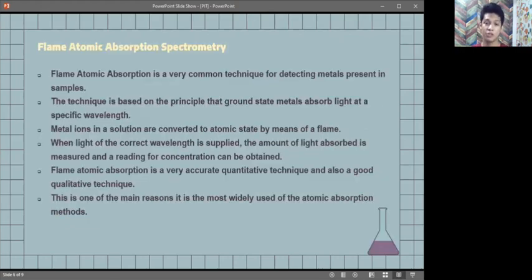Flame Atomic Absorption is a very common technique for detecting metals present in samples. The technique is based on the principle that ground state metals absorb light at a specific wavelength. When light of the correct wavelength is applied, the amount of light absorbed is measured and a reading of concentration can be obtained. Metal ions in a solution are converted to an atomic state by means of flames.